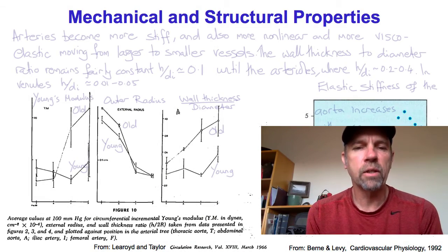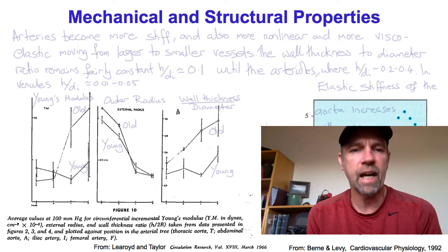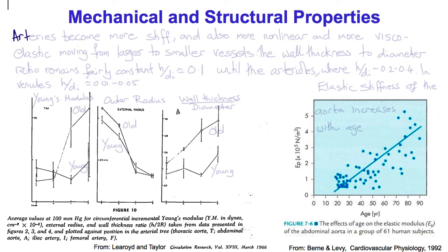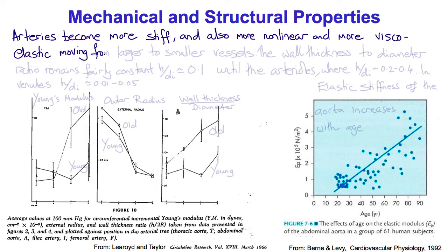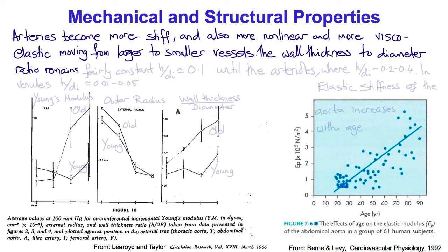This time we'll talk about the consequences of the mechanical and structural properties of the arteries on blood flow dynamics. In general, as we move along the aorta, the arteries become more stiff but also more non-linear in their stress-strain relation and more viscoelastic as we go from the aortic tract to the smaller vessels. The ratio of the wall thickness of the vessel to the diameter remains fairly constant at about 0.1 until we reach the arterioles, when it increases to about 0.2 to 0.4, because those are the resistance vessels with the larger amount of smooth muscle in their media.